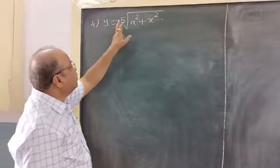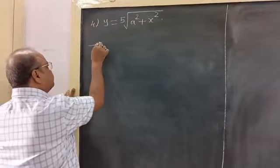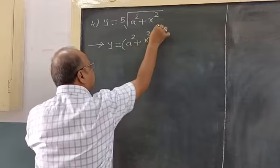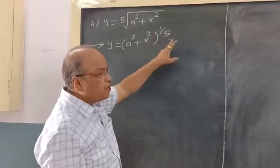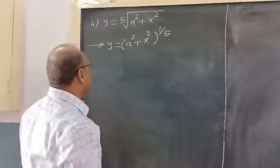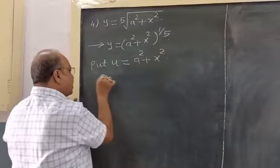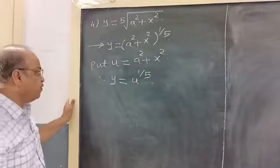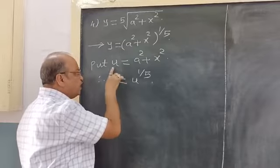Fourth example: y is equal to the fifth root of (a² + x²), where a is a constant and x is a variable. Simplifying: y is equal to (a² + x²) raised to the power 1 by 5. Fifth root means raising the power by its reciprocal 1 by 5. We put u equal to a² + x², so that y becomes u raised to the power 1 by 5. y is a function of u, and u is a function of x.